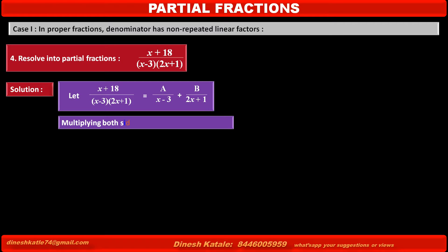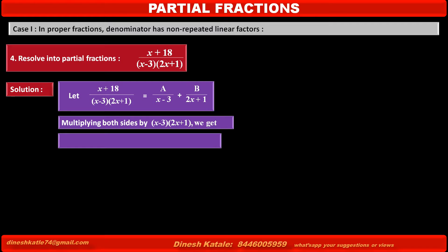Multiplying both sides by (x - 3)(2x + 1), which is the denominator of the given fraction, the left-hand side becomes x + 18. On the right-hand side, the first term becomes A(2x + 1) and the second term becomes B(x - 3). Consider this as equation number 1.